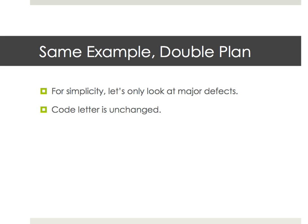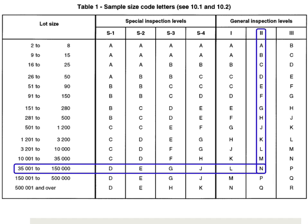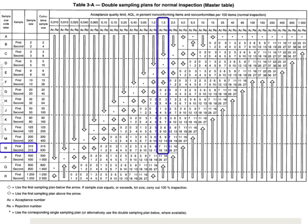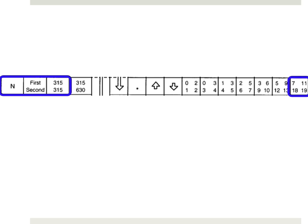If you find everything at or below the limits, it's accepted. For example, if the limit is 21 for minor defects and you find exactly 21, it's accepted — even though the buyer is probably not very happy, because the average quality is probably not very good. Now let's do the same example with a double sampling plan. For simplicity, let's just look at major defects. The code letter is still N because you still purchase 40,000 pieces at level 2.